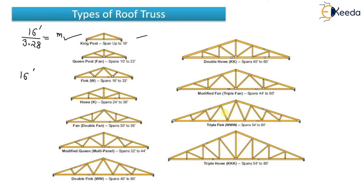Queen post truss, also known as span truss, is used for spans of 10 to 22 feet. Fink truss makes a W shape — that's why it's also known as W truss — and is used for spans of 16 to 33 feet. Howe truss is used for 24 to 36 feet. Fan or double fan truss is used for 30 to 36 feet. Modified twin (multi-panel) truss is used for 32 to 44 feet. Double Fink truss covers 40 to 60 feet, and Double Howe (also known as Double K) covers 40 to 60 feet as well.